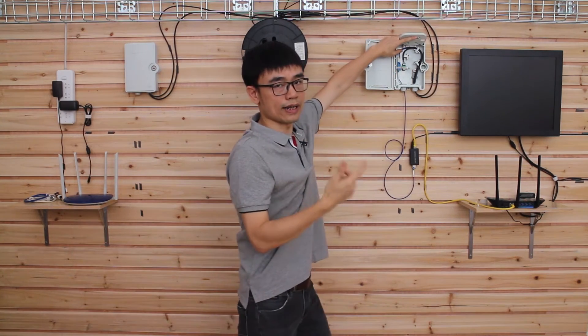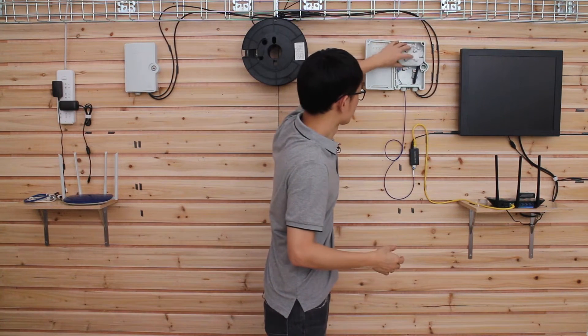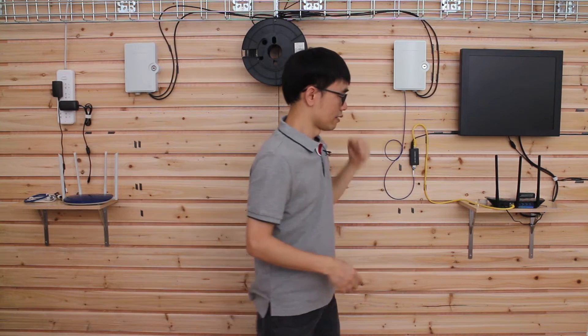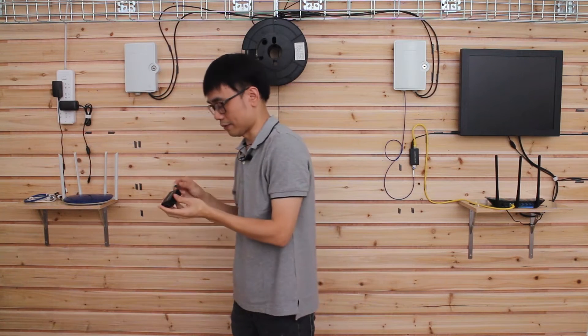Now just move to the connection box and I'm choosing the A. We have two stripes, one is A, the other is B. So when we move to the other side, we also want to make sure we are using the A. Otherwise, it will not work, right? Okay, it's ready for the first end. Now let's get another media converter and go to the second end.